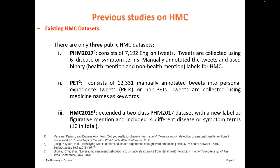The third dataset, HMC 2019, extended the two-class PHM 2017 dataset with a new label for figurative mention and included four different disease or symptom terms, ten in total. All three datasets are collected from Twitter. The first two use binary labels and the third uses three labels: health mention, non-health mention, and figurative mention.